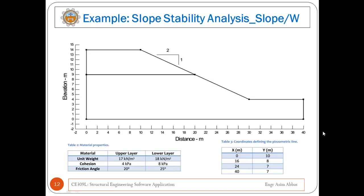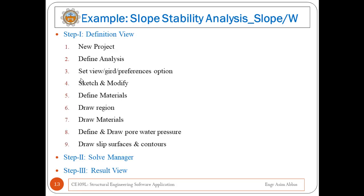Now I will discuss how to solve the slope stability example given in this slide using Slope W. In the example, the slope is made of two different materials and the material properties are given along with the piezometric line.